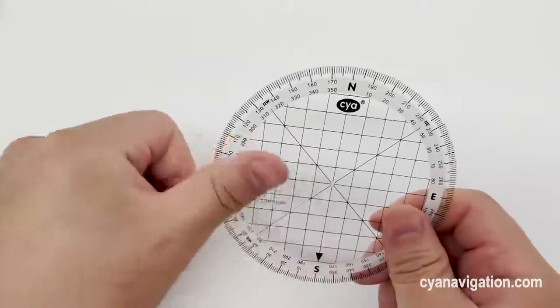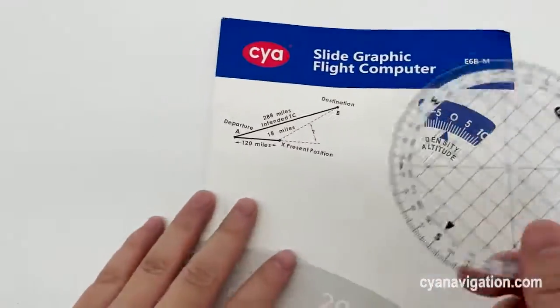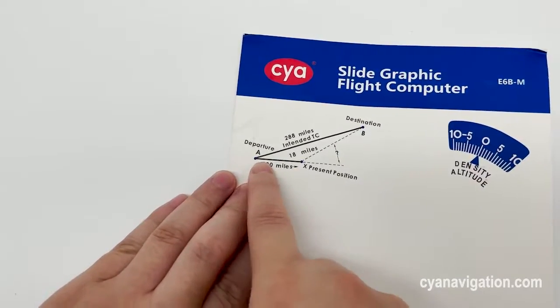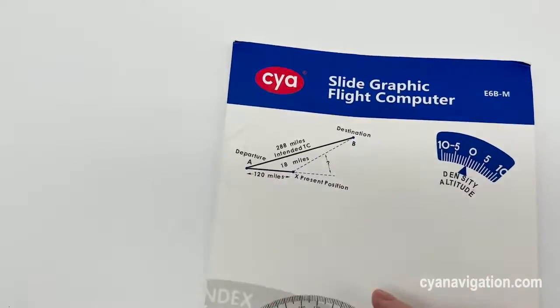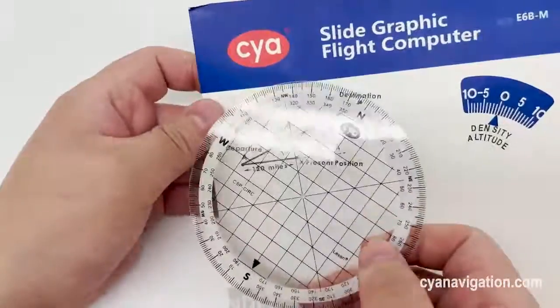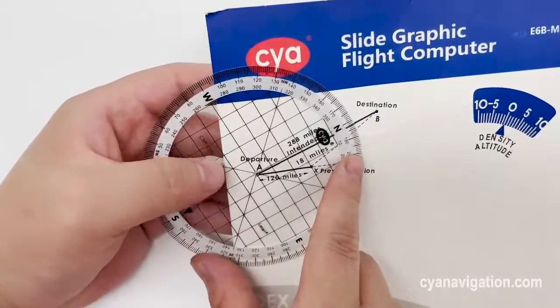To use, for example, when we read this type angles from departure A to destination B, we can use this one to check the angles.